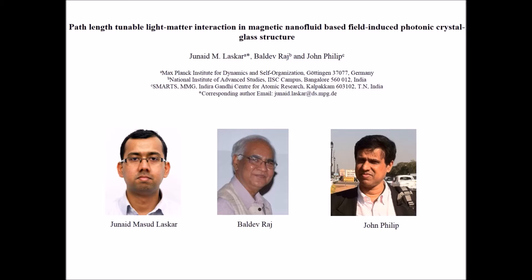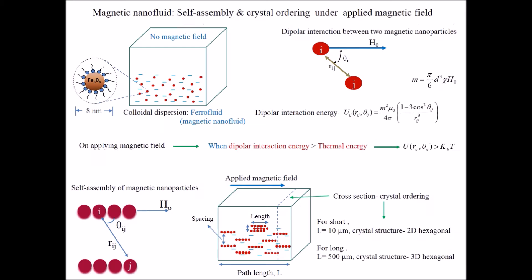A magnetic nanofluid is the dispersion of nano-sized magnetic particles in a carrier liquid. In the absence of any external magnetic field, the nanoparticles inside the nanofluid undergo random Brownian motion. However, on applying external field, the nanoparticles self-assemble and form chains and column-like structures along the applied field direction when the induced dipolar interaction energy of the nanoparticles overcome their thermal energy.